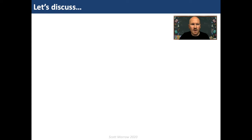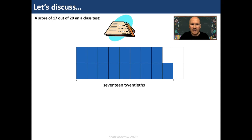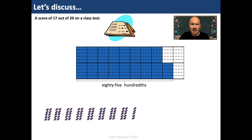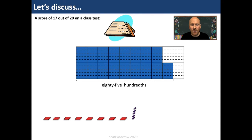Let's discuss the next problem: a score of seventeen out of twenty in a class test. I can draw a bar split into twenty parts to make twentieths, identifying seventeen of those. We're not working with tenths or hundredths. Trying to convert to tenths gives half a tenth, which isn't helpful. So I convert to hundredths: splitting each twentieth into five equal parts gives a hundred parts overall. Seventeen twentieths are equivalent to eighty-five hundredths. Ten hundredths make a tenth, so I can use eight tenths and five hundredths, written as 0.85.